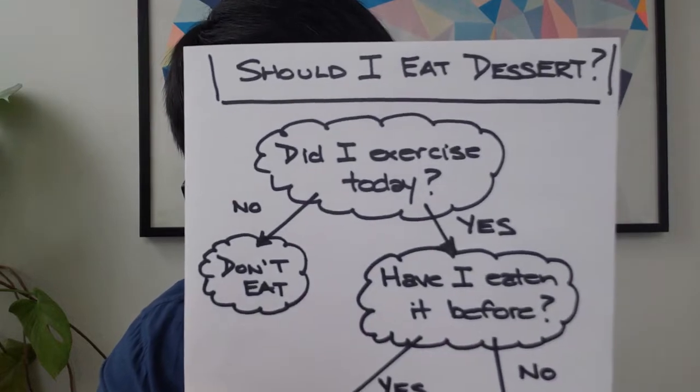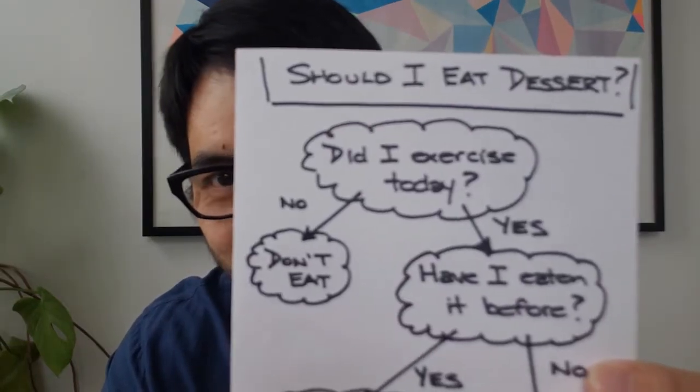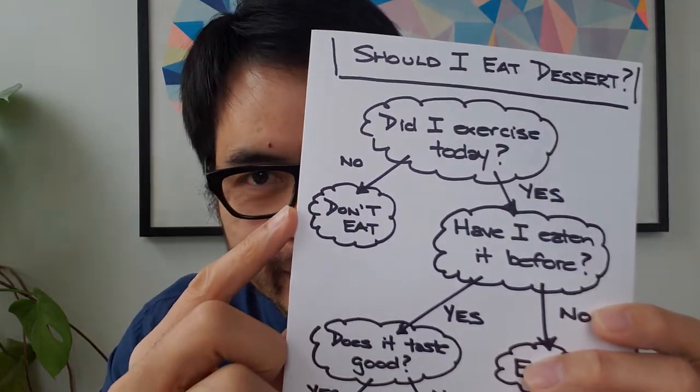This chart right here is awesome. It's a decision tree my students and I created to determine if I should eat dessert tonight. For example, did I exercise today? If the answer is no, then don't eat dessert. In this episode, I show you how I develop these with my students and, more importantly, how we use these in a science lesson. Handouts for this episode can be found at realsciencechallenge.com EP17.